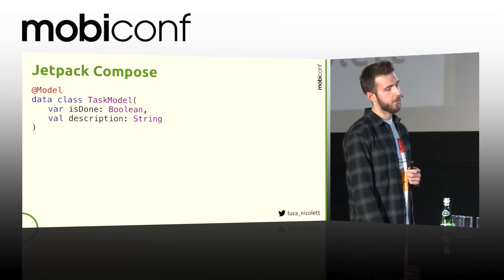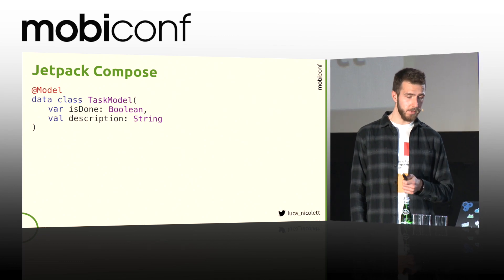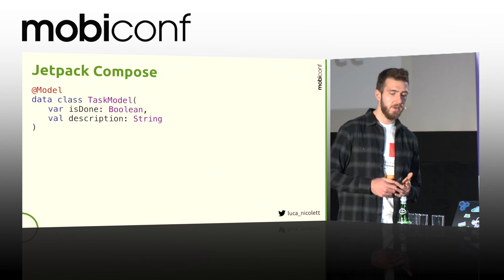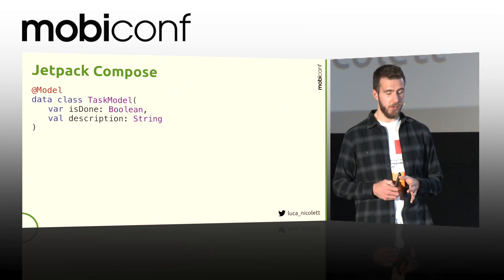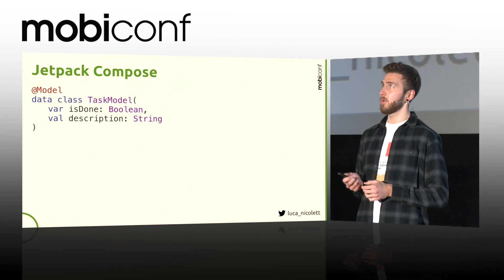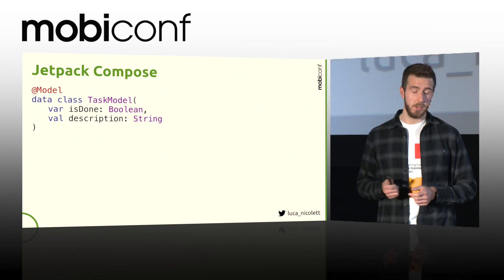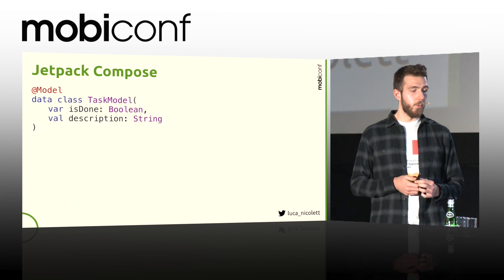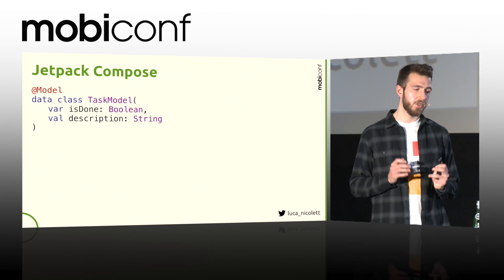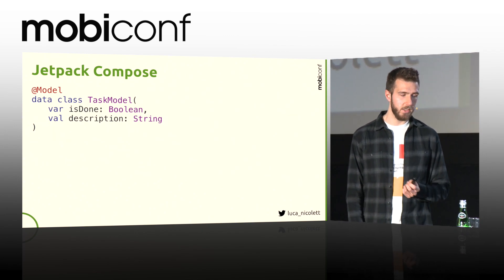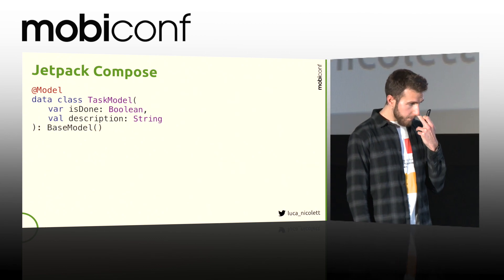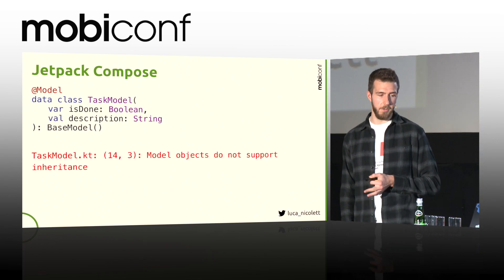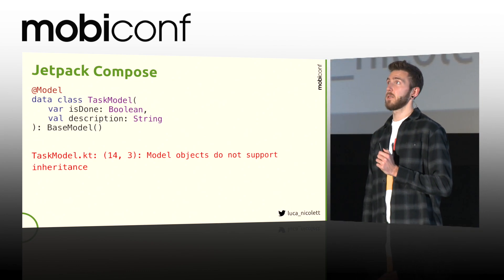A model-annotated class should represent your application data model. The instance of this class becomes observable, and every set on each property of that class triggers the invocation of a composable function, which will redraw whatever the state the model represents. Keep in mind that the observation is done on the setter method of the variables of the class, so those need to be variables. In this example we have a variable and a constant — isDone and a description. The composable function drawing the description on screen will never be triggered again on the description part, only when isDone is changed. Be aware that hierarchy is not accepted on model-annotated classes — you get a compilation error. You can implement interfaces.